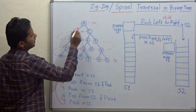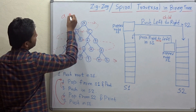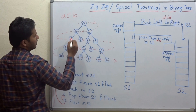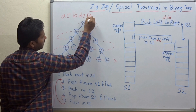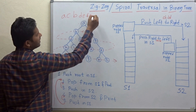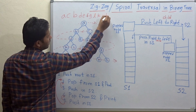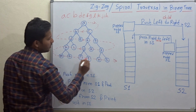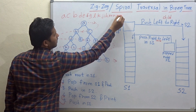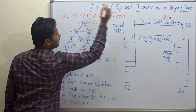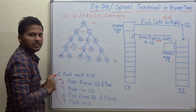So let's write it: A, then C, B, then D, E, F, G, then L, K, J, I, H, then M, N, P, Q, R, S. Yes, this is the spiral order traversal of this binary tree.